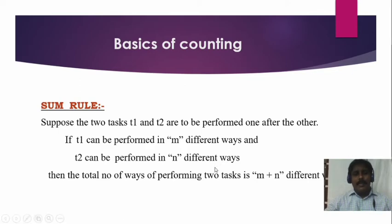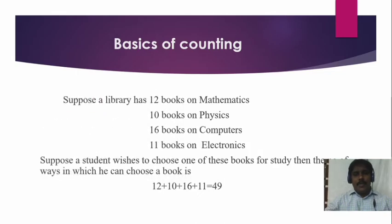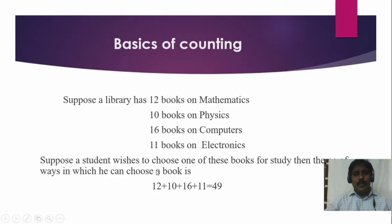Now we see an example. Suppose a library has 12 books on mathematics, 10 books on physics, 16 books on computer science, and 11 books on electronics. If a student wishes to choose one book for study, the number of ways he can choose is 12 plus 10 plus 16 plus 11, which equals 49 ways. This is solved with the help of the sum rule.